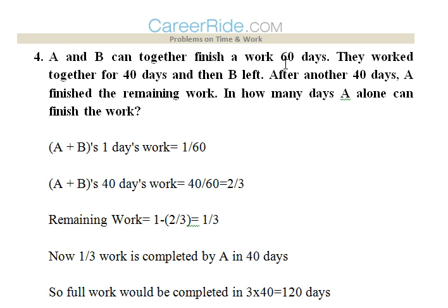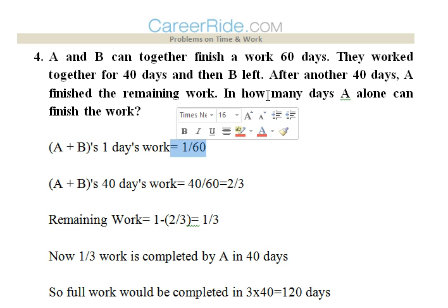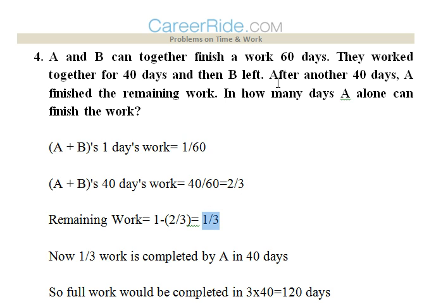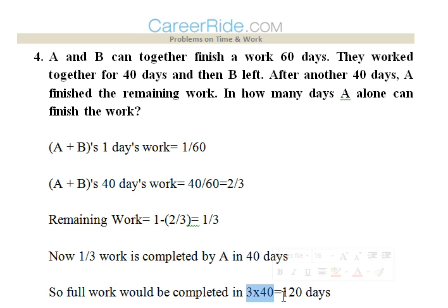Fourth question: A and B can together finish a work in 60 days. They work together for 40 days and then B left. After another 40 days A finished the remaining work. In how many days can A alone finish the work? A plus B's one day work is 1/60. Their 40-day work is 40 into 1/60 = 2/3. Remaining work is 1 minus 2/3 = 1/3. This 1/3 is completed by A in 40 days, so A completes the whole work in 3 into 40 = 120 days.